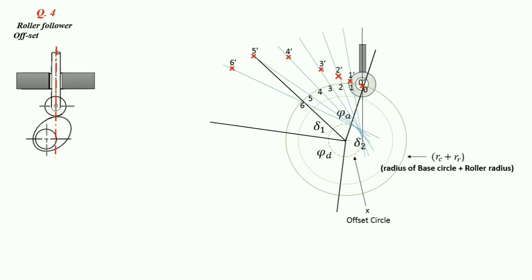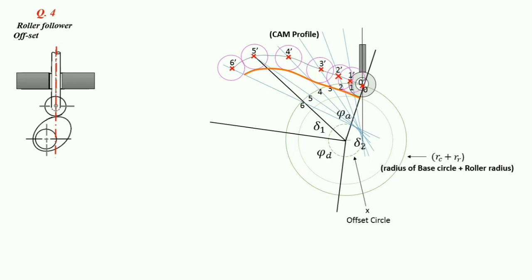We will join all the points by a smooth curve step by step. After that, we will draw a roller circle on each point, and the final cam profile will be tangent to these circles. This is the cam profile — in this way we will complete this numerical.